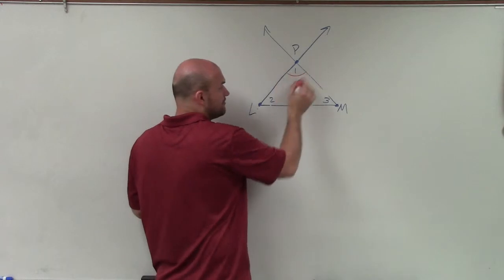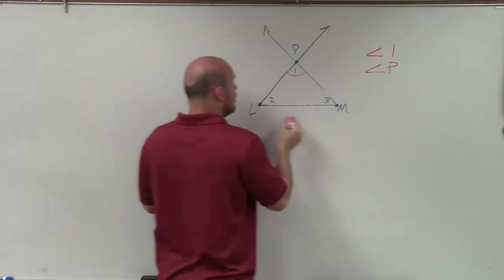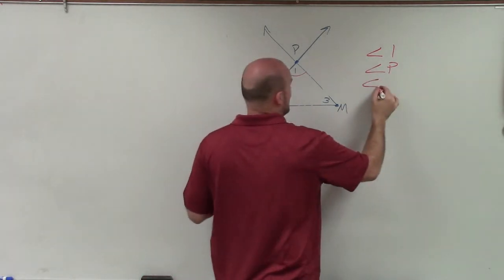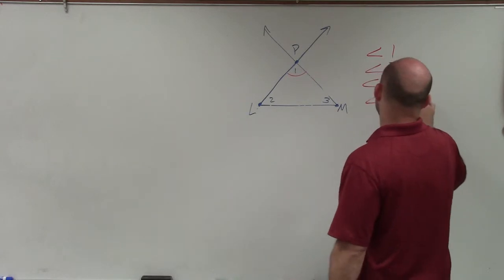So you can see here is angle 1, right? So we can label that as angle 1, angle P, or we could also label it by the points that create the angle: angle LPM or angle MPL.